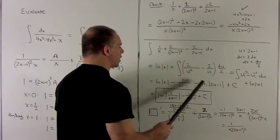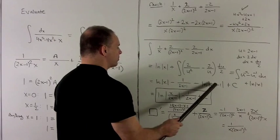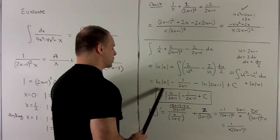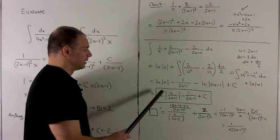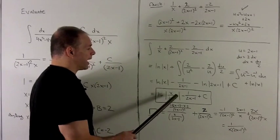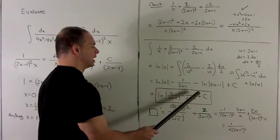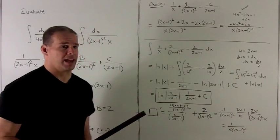Note, I have a difference of two natural logs here. So I can just put this term in the bottom of this one, giving me natural log x over 2x minus 1 absolute value minus 1 over 2x minus 1 plus a constant. And that's my answer.